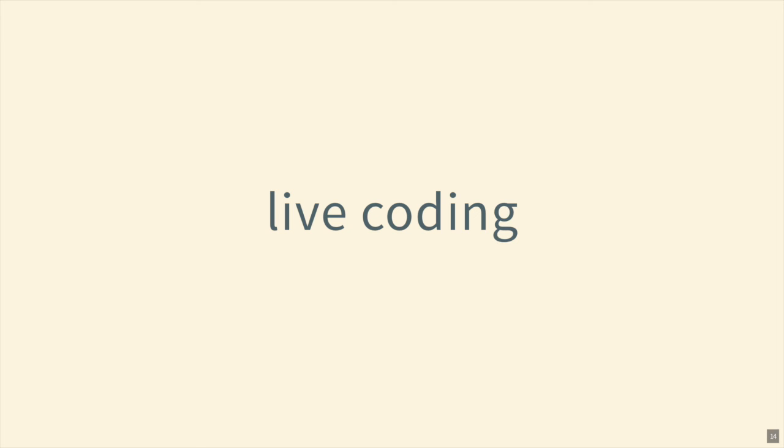There's also a write-to-disk helper, similar to write_disk() in httr. Instead of getting the object back in the R session, it writes the HTTP response directly to disk and returns the path. Here we go to api.github.com/org/ropensci/events and pipe to api_write() with a temp file path. Then we can use readLines() on that temp file to see the data.